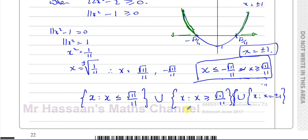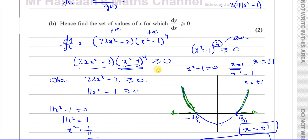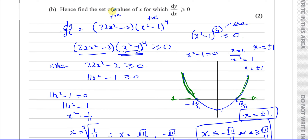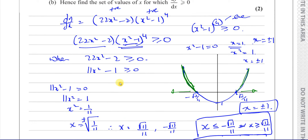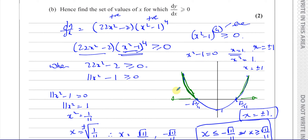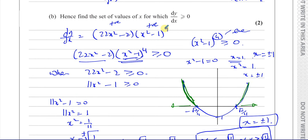I'm pretty sure that x equals plus or minus 1 should be in the answer. I've written to the examining board just yesterday pointing that out. If what I'm saying is correct I will leave this as is; if not, I will remove it. The mark scheme doesn't include plus or minus 1, but it's clear to me they should be included — because if it said just greater than 0 without the equal sign, then the answer would just be those two ranges. But x equals minus 1 makes dy/dx equal to 0, which satisfies the greater than or equal to 0 condition.